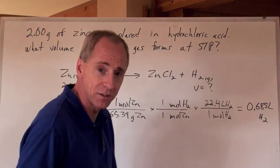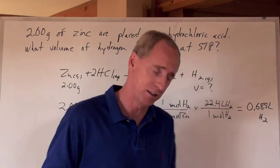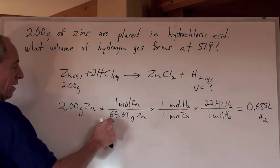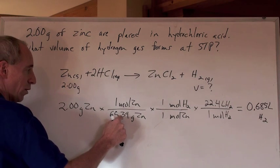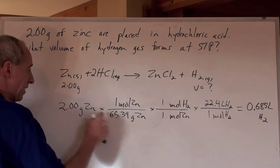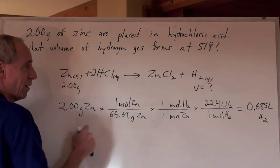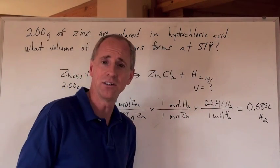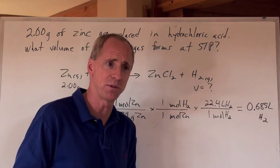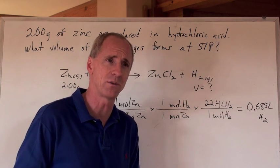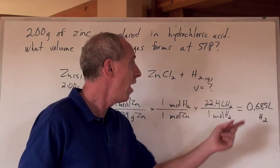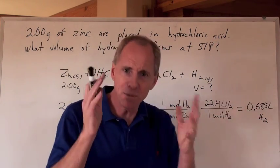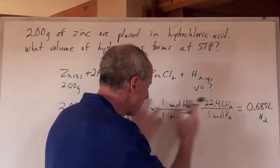Does that actually make sense? Two grams of zinc at 65.39 grams per mole is just about 3% of a mole. So what's 3% of 22.4 liters? Well, 10% is 2 liters, so 3% is about a third of that — around 0.6 to 0.7. And 0.685 — yeah, it works out. Think about it, it's got to be logical.